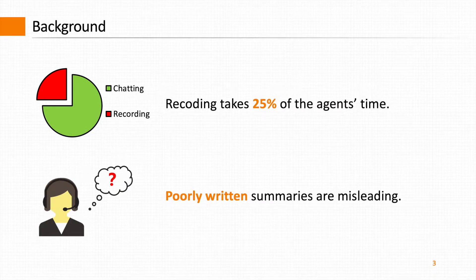Second, poorly written summaries can be misleading. Automatic summarization can help guarantee all the summaries have an even standard.